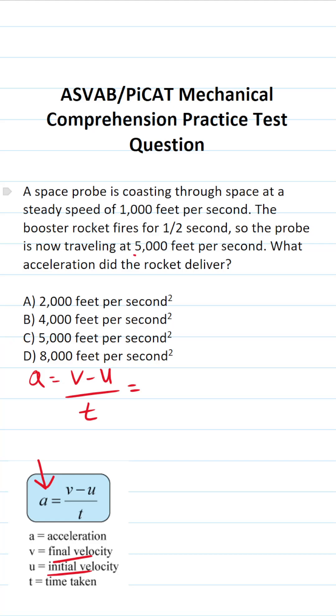What is our final velocity? After the booster rocket fired, we're now moving at a velocity of 5,000 feet per second.